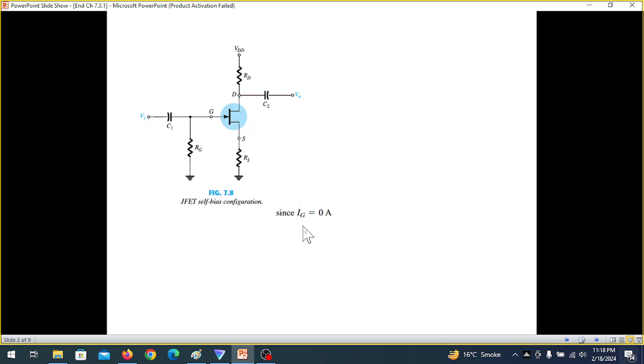As we have done in the previous case also for DC analysis we remove the capacitors or open the capacitors. We also know that the current through the gate is equal to zero. That means there will be no voltage drop in RG. So the circuit can be further simplified like this. This is eliminated.